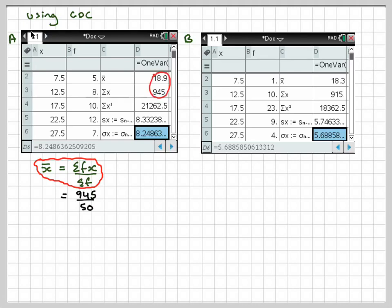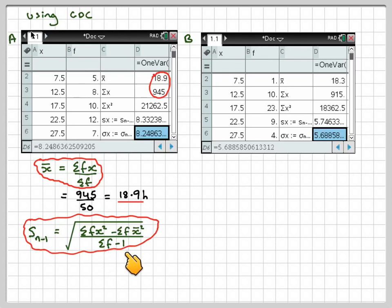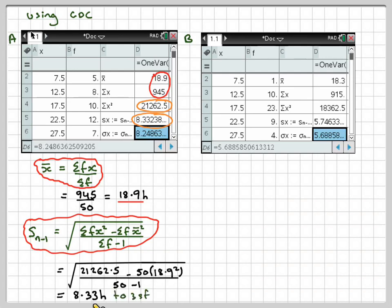Sn: Σfx̄ minus (Σfx̄)² over Σf minus one. So that will give me that number minus 50 times 18.9 squared, over 50 minus one, which gives me 8.33. So we take this one here: sx = 8.33.